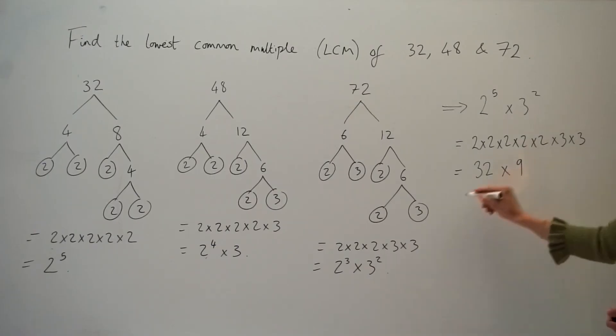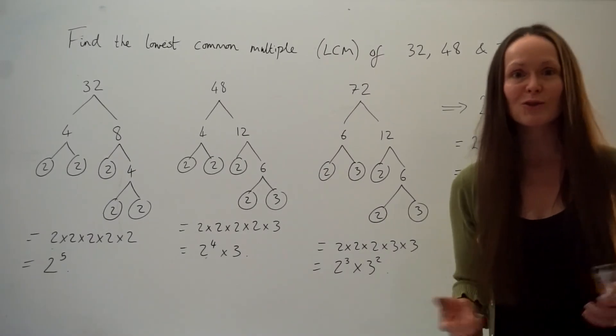So 32 multiplied by 9 is 288. So that is the lowest common multiple of those three numbers.